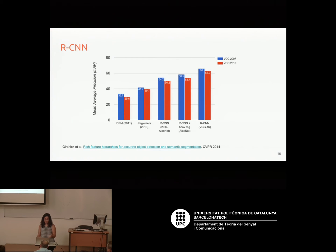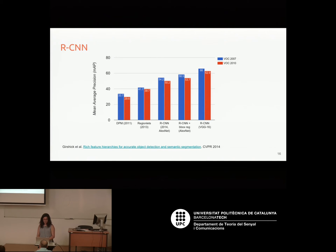Looking at the performance results, we compare against DPM (the Deformable Part Model, pre-deep learning). R-CNN significantly increases performance. Using AlexNet gives about 20 points improvement, and switching to the deeper VGG16 gives around 30 points of difference — a big improvement.